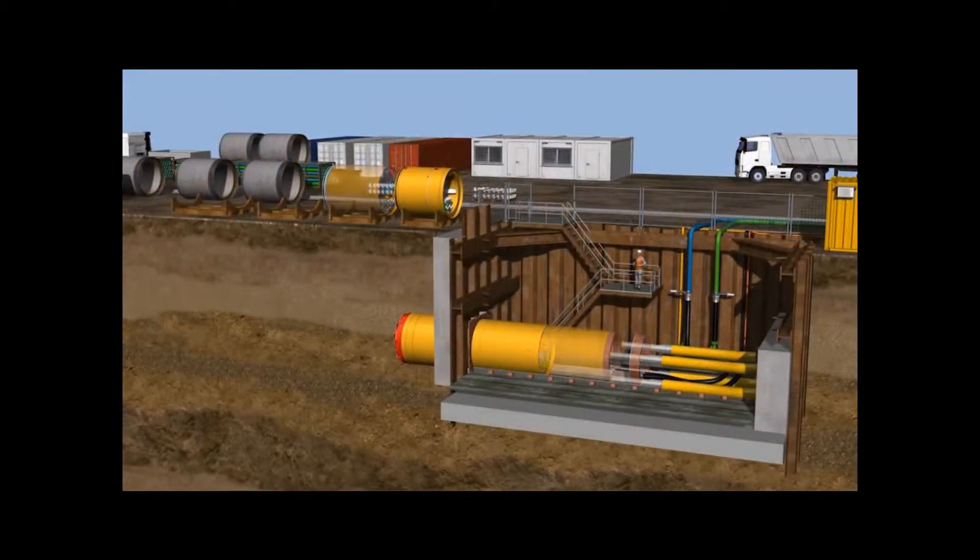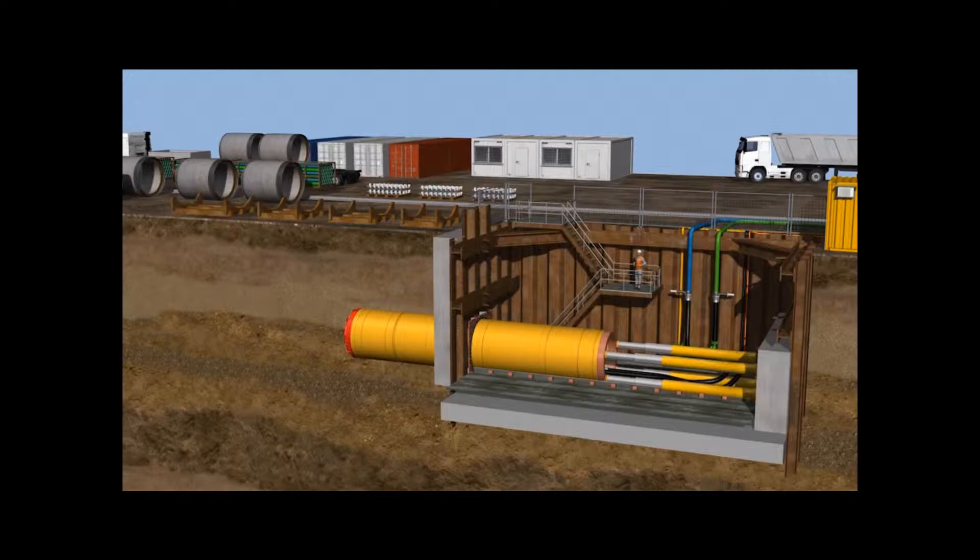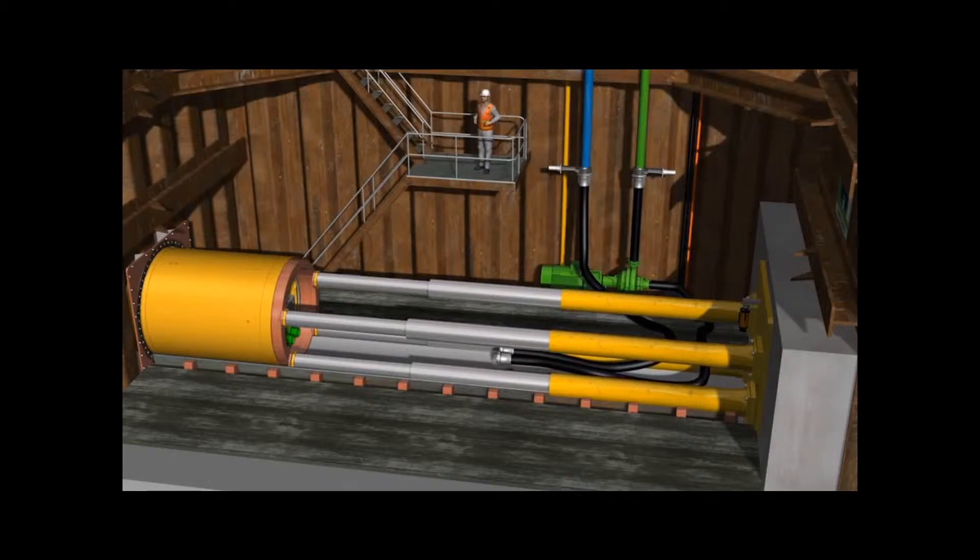Now the next machine module can be installed. After another stroke, the last module is installed. After each stroke, the quick-release fasteners of the connecting hoses are released to make room for the next pipe installation.